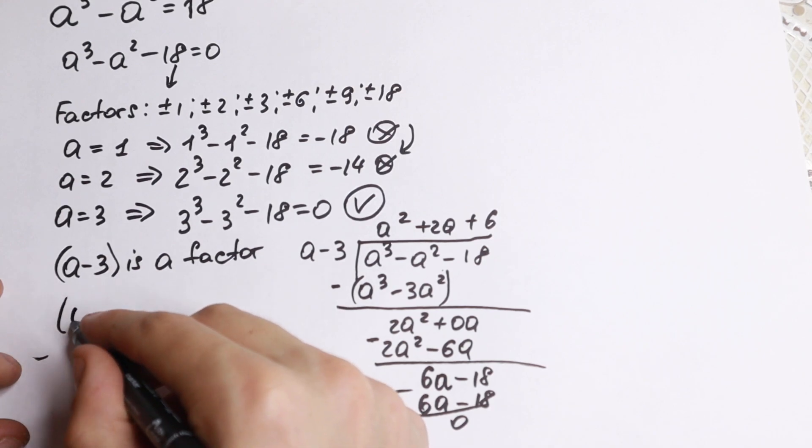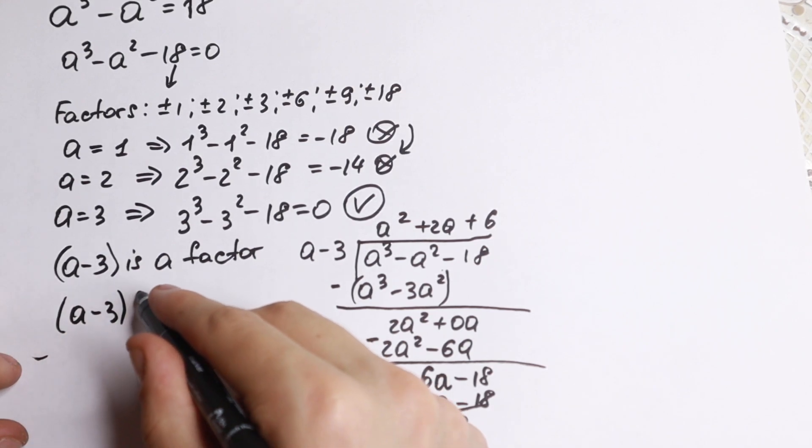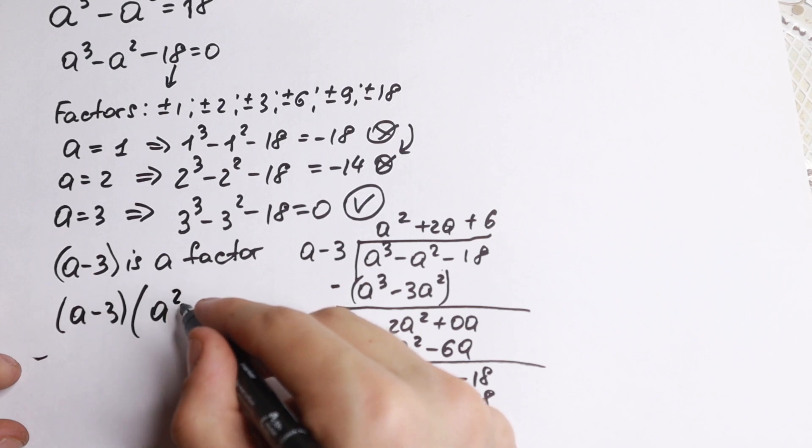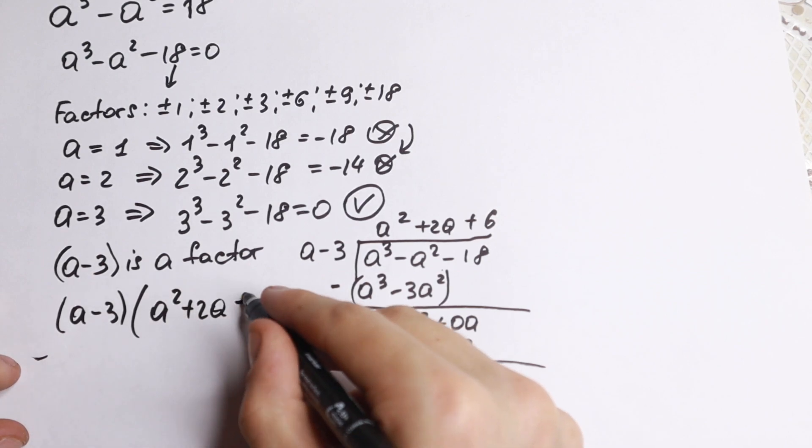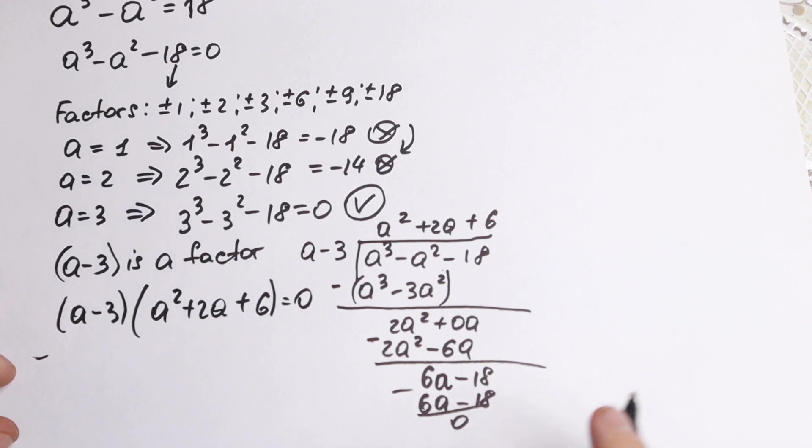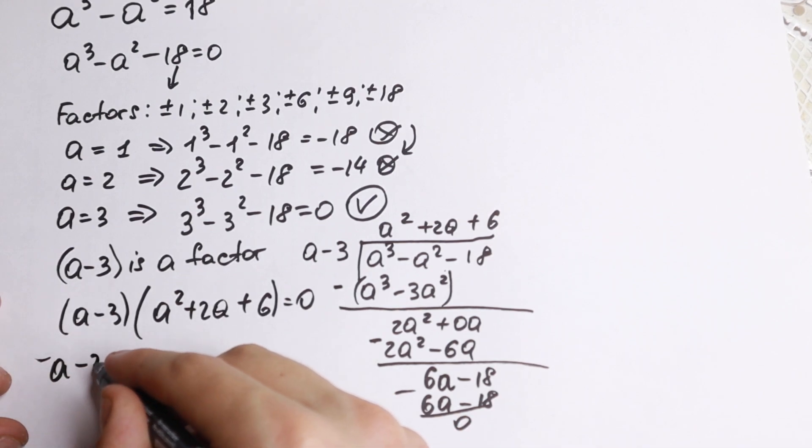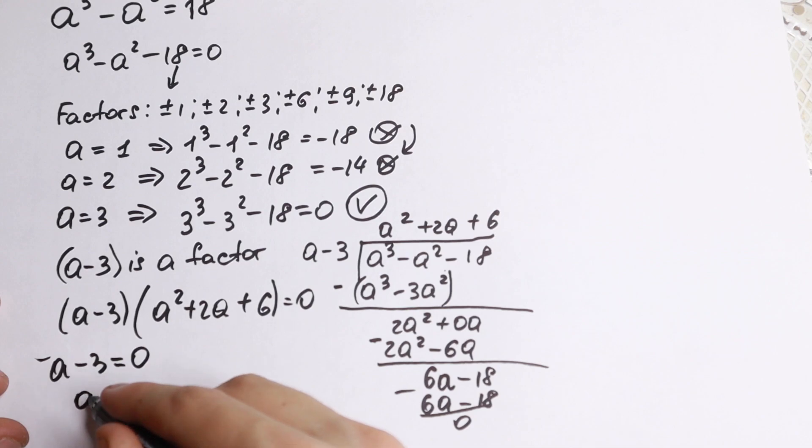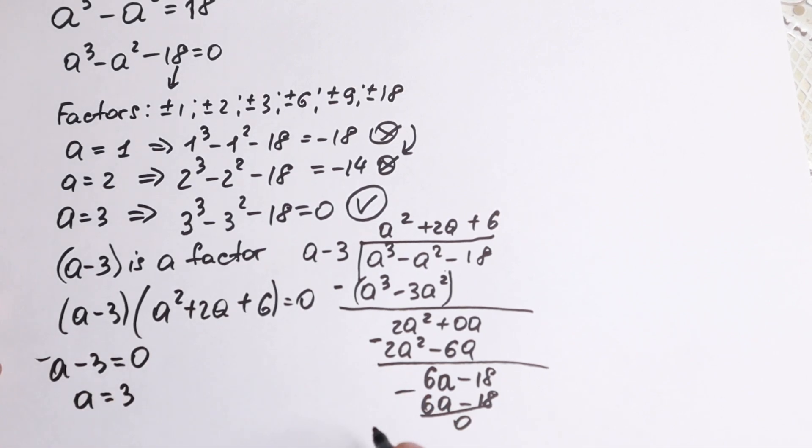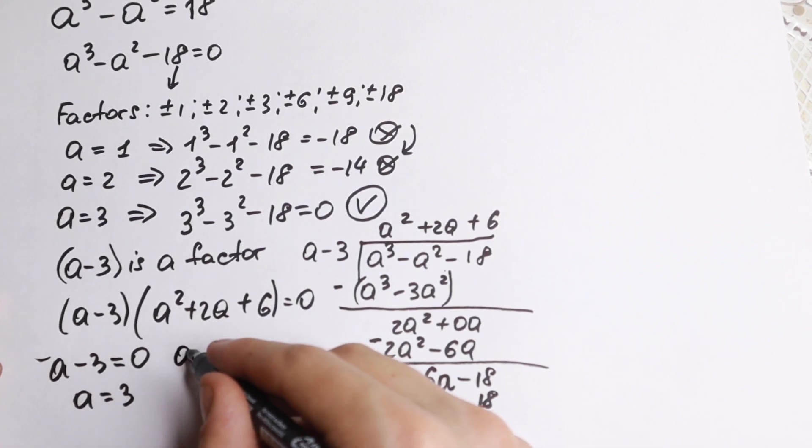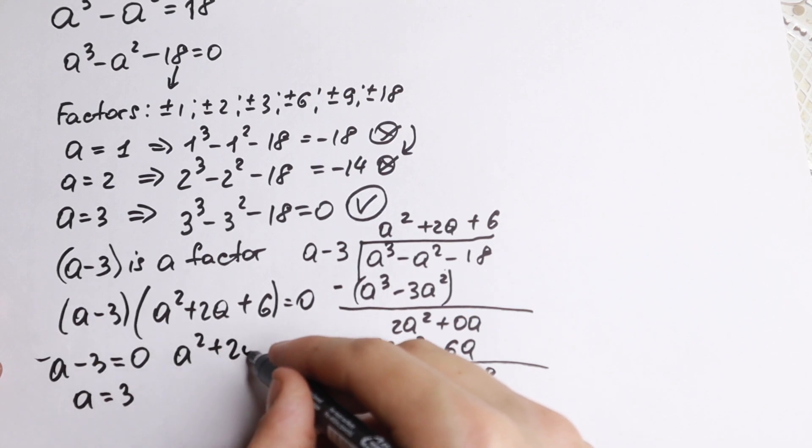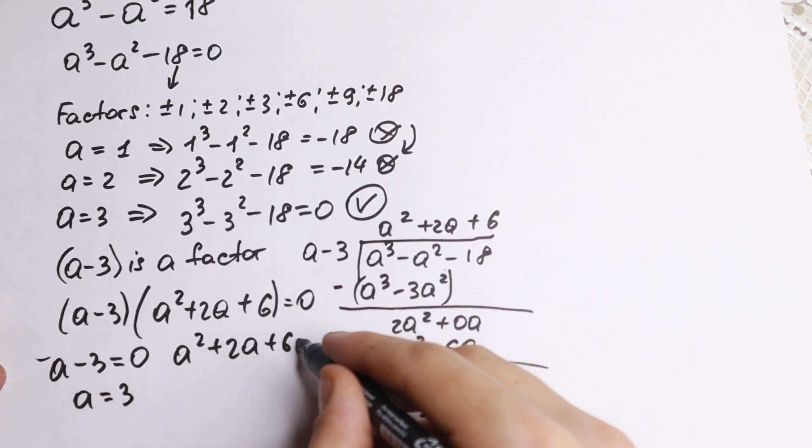So as a result, what factor we will have? (a - 3)(a² + 2a + 6) = 0. So finally we factored our equation, and it's really good because right now we can easily write that a - 3 = 0, from here a = 3.